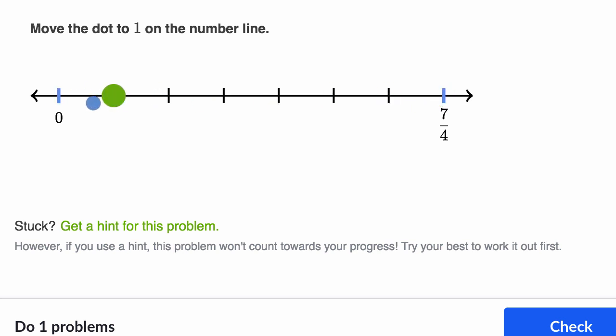because then it would be one fourth, two fourths, three fourths, four fourths, five fourths, six fourths, and seven fourths. All right, we're making some good progress. So where would one be?